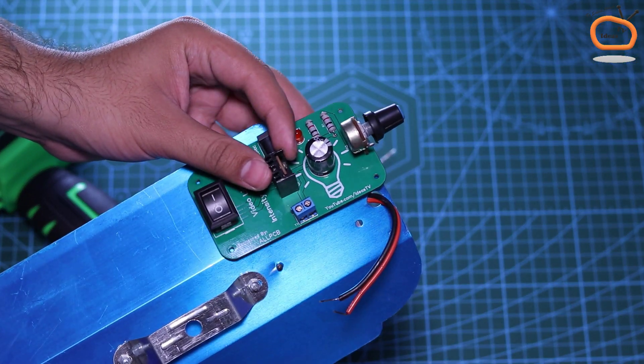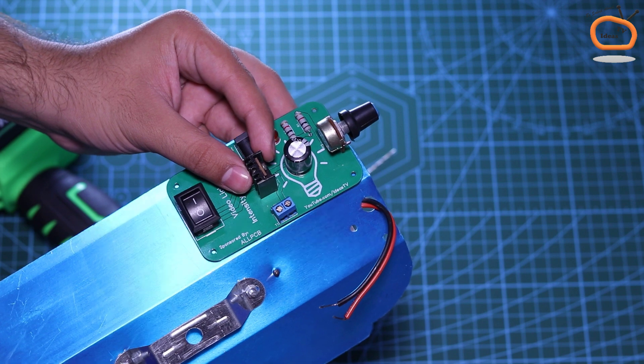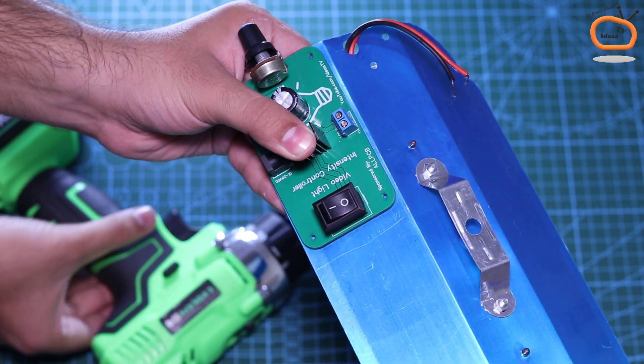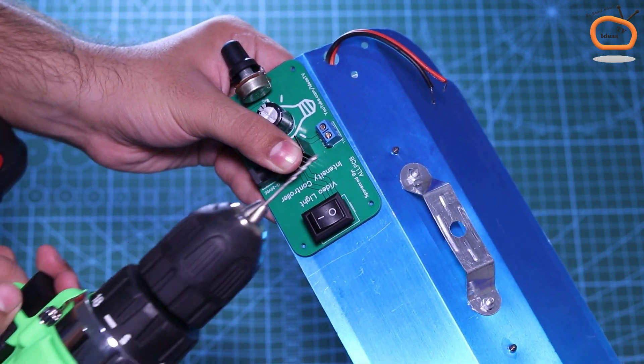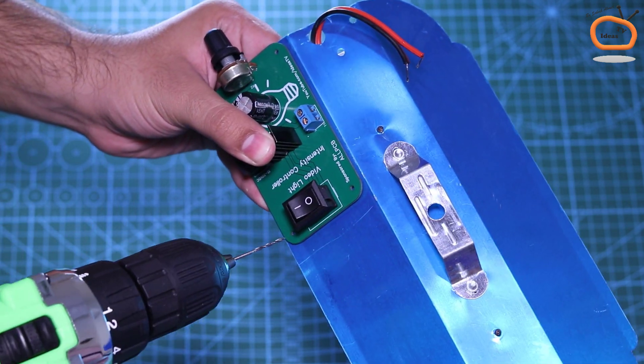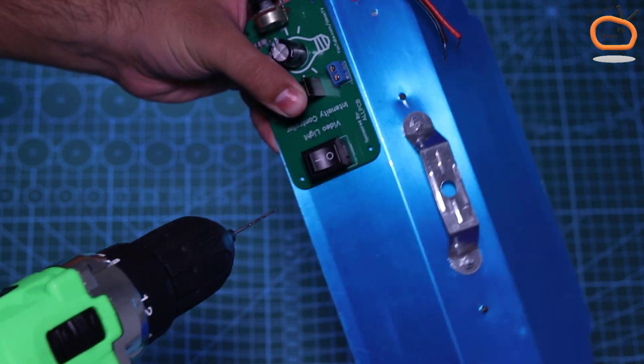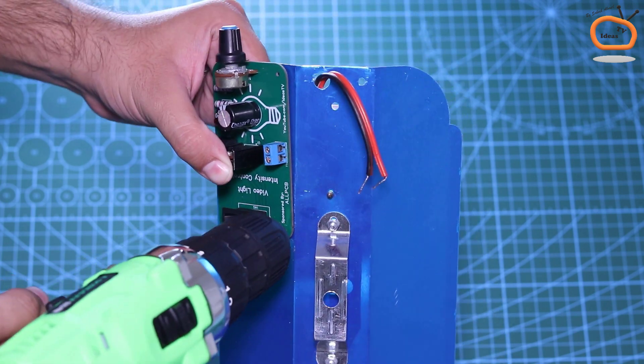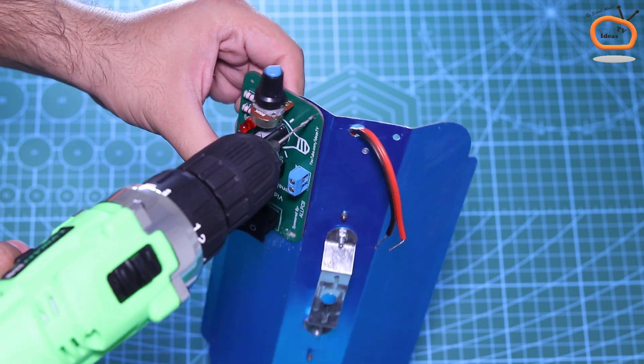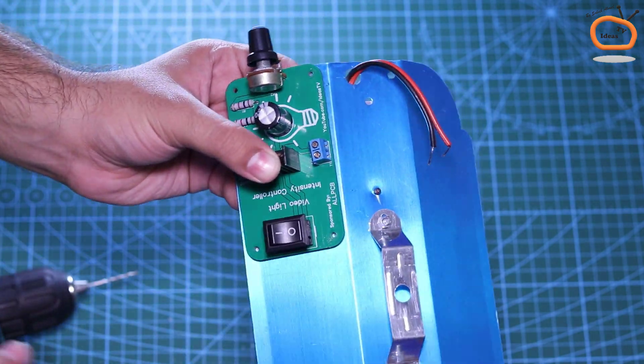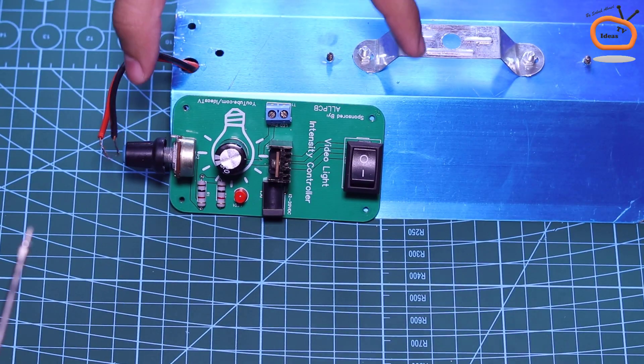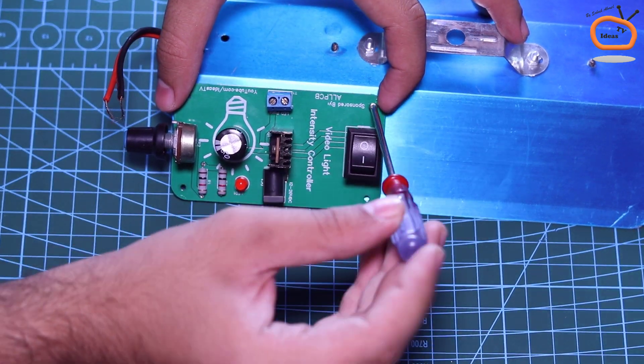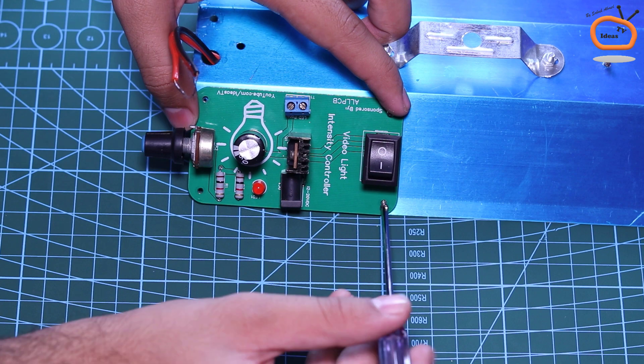Now we have to drill some holes in the LED shade as shown in order to attach the controller board. So, let's get started.